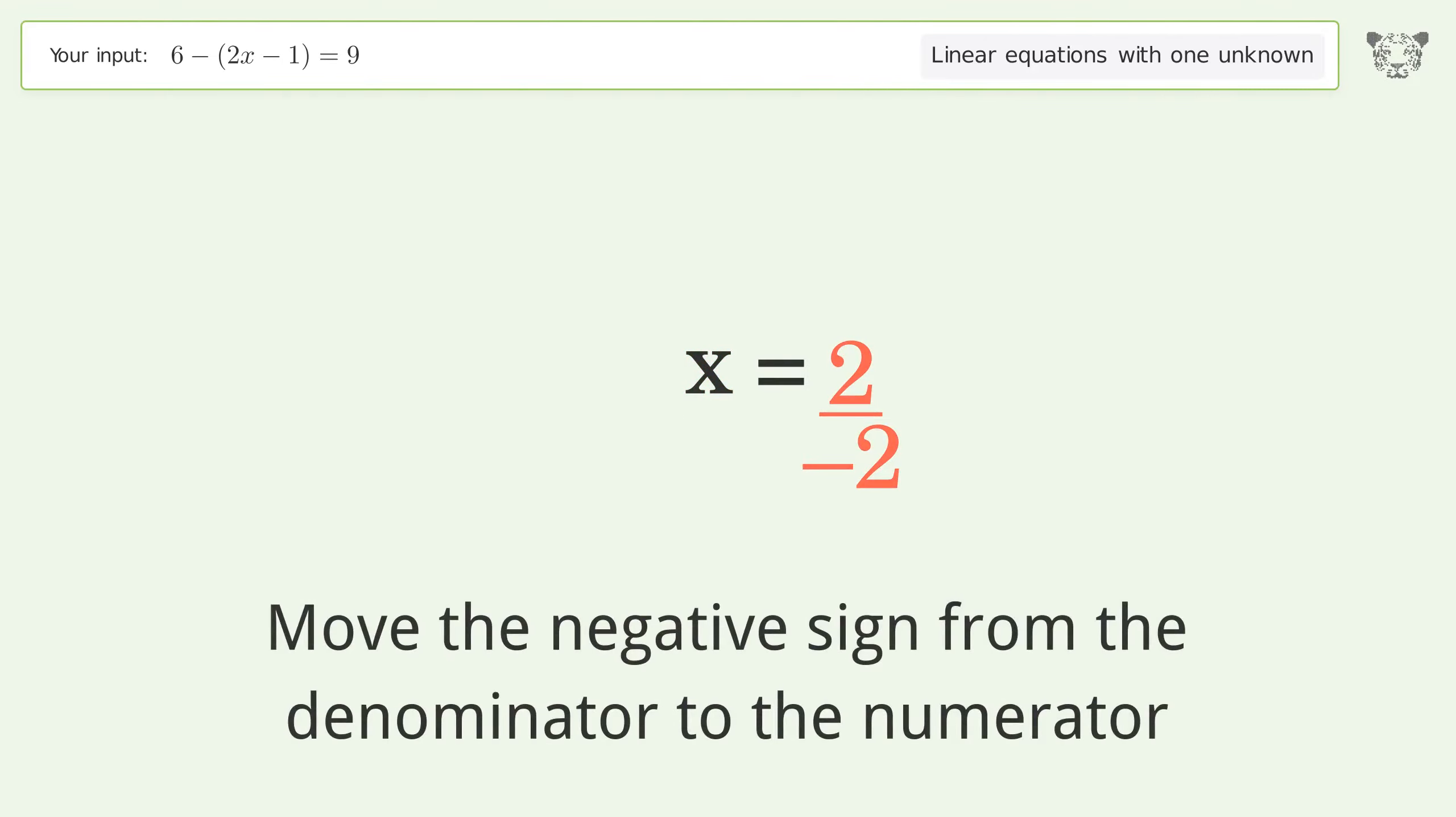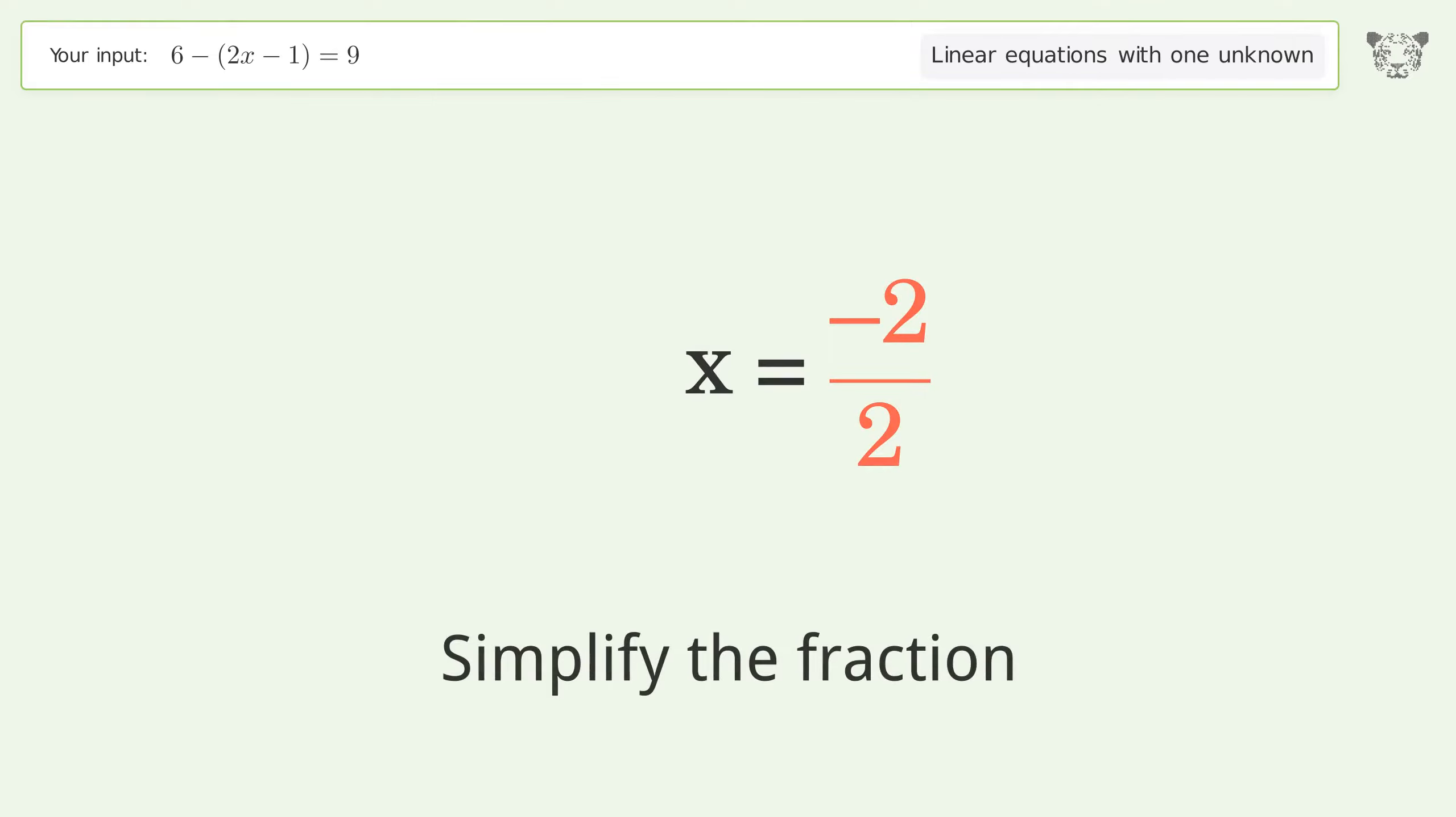Move the negative sign from the denominator to the numerator. Simplify the fraction. And so the final result is x equals negative 1.